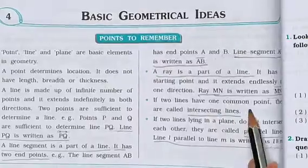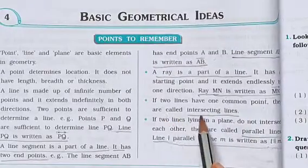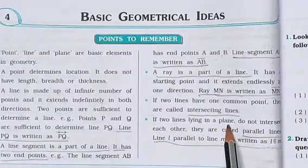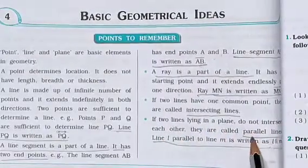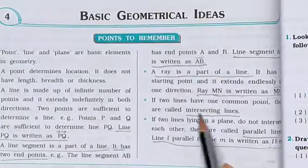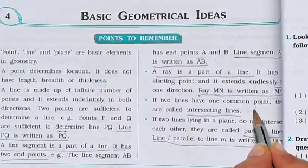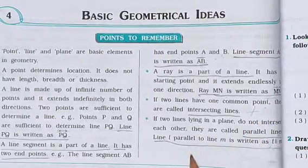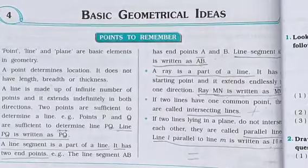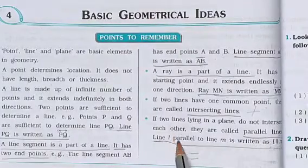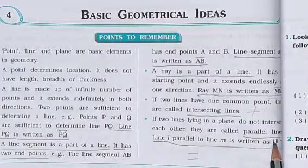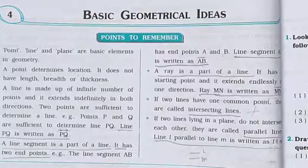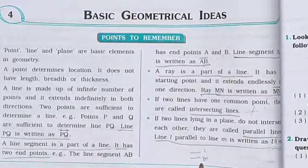If two lines have one common point, they are called intersecting lines. If two lines lying in a plane do not intersect each other, they are called parallel lines. Intersecting lines share a common point, while parallel lines have no intersection. Line L parallel to line M is written as L ∥ M.